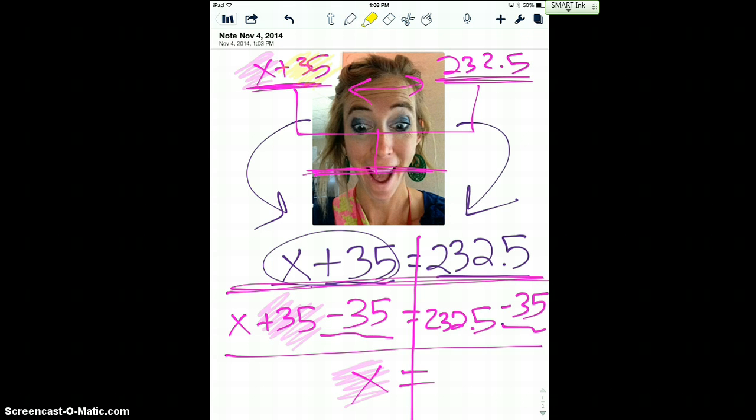So now when I have 35 minus 35, I am left with zero. So I'll just have x plus zero, which is just x. And then on the right, I'm gonna have to actually subtract. And we already did the subtraction and we got 197.5.